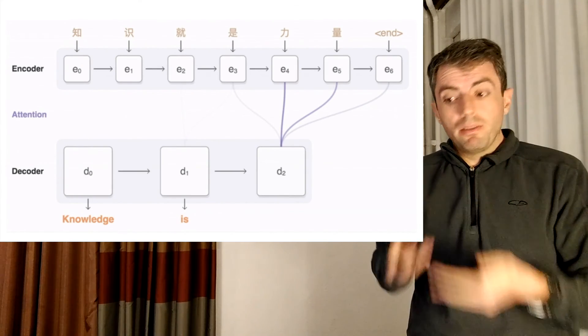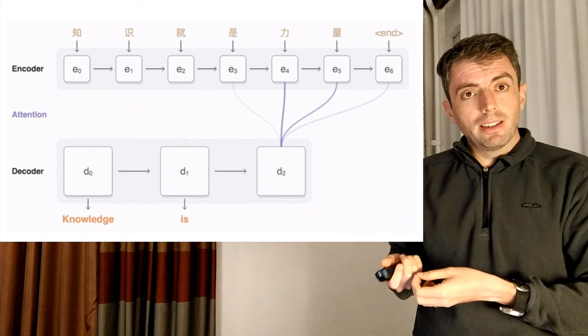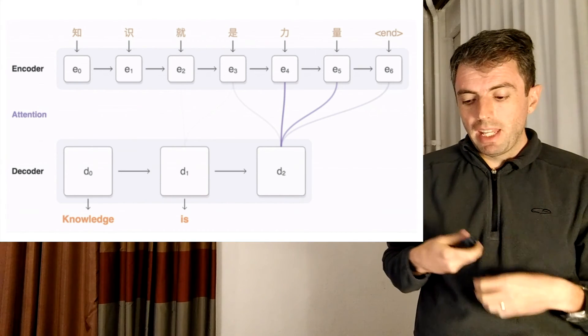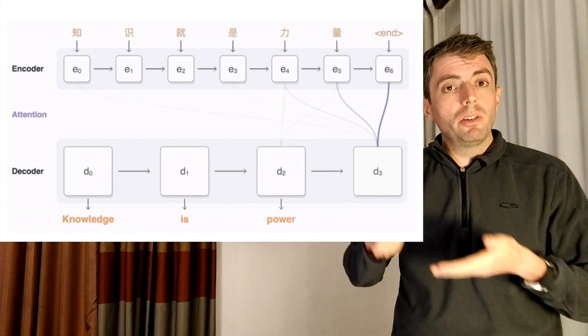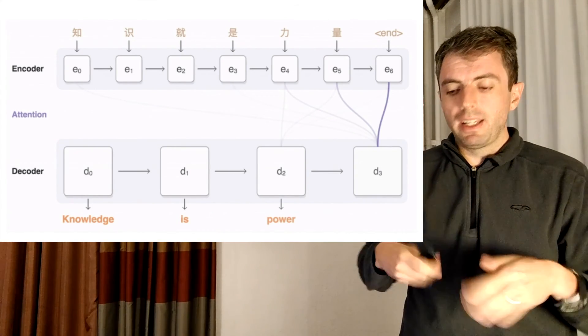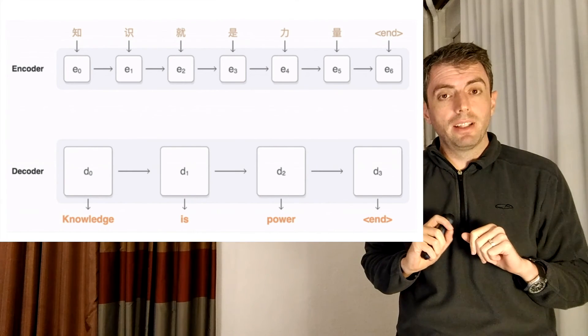And so you can take that into account and figure out that the next word is going to be is. And then finally, you translate the last word as power, focusing on the final two characters in Chinese. And again, you can generate a boundary marker to say, hey, I finished translating this sentence.